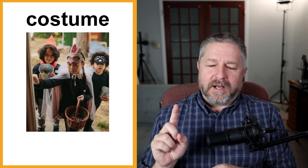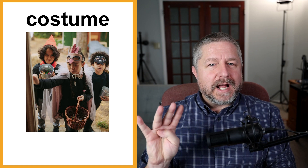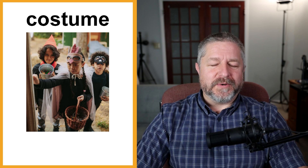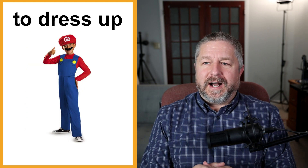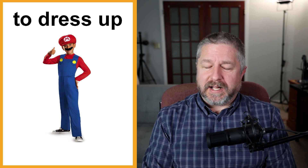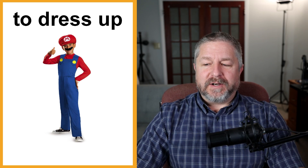When I was a kid, you could either be a cow, a pirate, a cowboy, or a princess. I think we only really had four Halloween costumes at our house. You can say 'I'm going to be Mario for Halloween,' 'I'm going to wear a Mario costume for Halloween,' or 'I'm going to dress up as Mario for Halloween.' A few different ways to talk about how you are going to dress up to go out for Halloween.